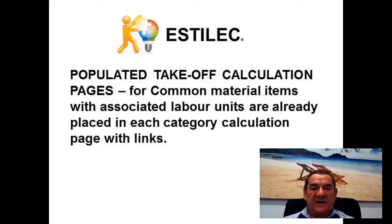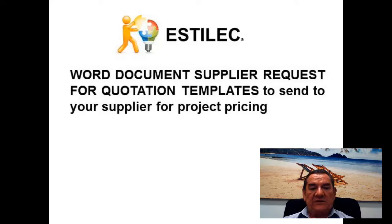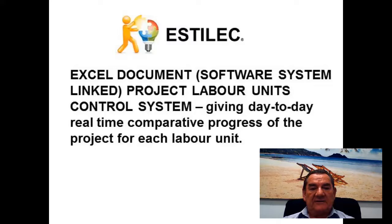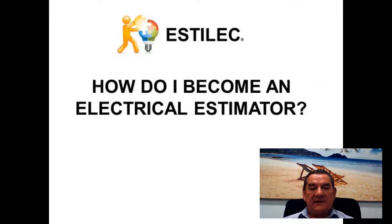Populated take-off calculation pages for common material items with associated labour units are already placed in each category calculation page with links. Word document supplier request-for-quotation templates can be sent to your supplier for project pricing, and a word document customer tender letter template allows changes to suit each particular tender sent to your client. An Excel document software system links a labour units control system giving you day-to-day real-time comparative progress of the project for each labour unit.